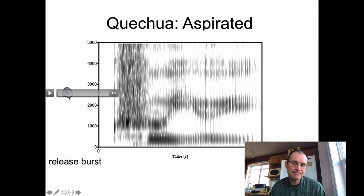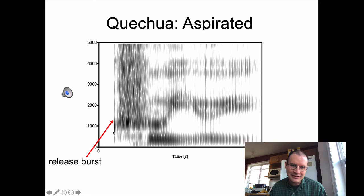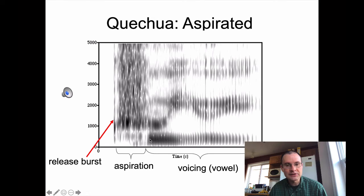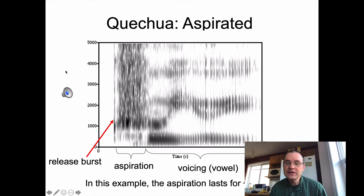Here's the Quechua aspirated stop. Here's the release burst in the spectrogram — a velar release burst, identifiable by a little peak of intensity, basically one vertical stripe going up and down the frequency scale. Then there's a substantial period of aspiration: he's released the stop, air flows through the open vocal tract, and eventually he closes his glottis enough to get voicing, followed by a long vocalic stretch. In this example, the aspiration — the part between the release burst and the beginning of voicing — lasts about 135 milliseconds, which is a lot of aspiration.